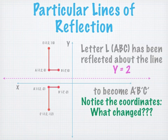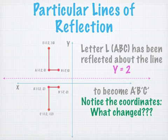We have the same letter L with points ABC, and it's been reflected over the line Y equals 2, the pink line. A was negative 12, 6 and is now A prime at negative 12, negative 2. B was negative 7, 6 and is now B prime at negative 7, 2. C was negative 12, 16 and is now C prime at negative 12, negative 12. Do you see a pattern? What has changed? You might need to pause and figure out what's going on.